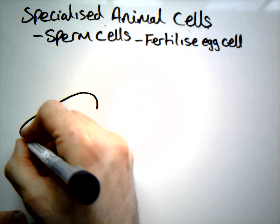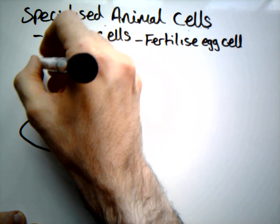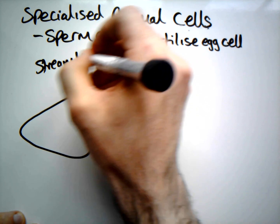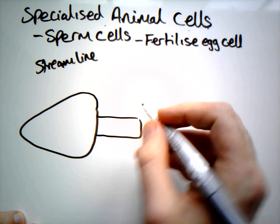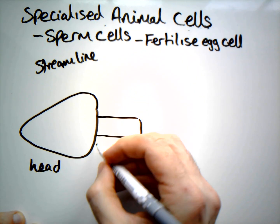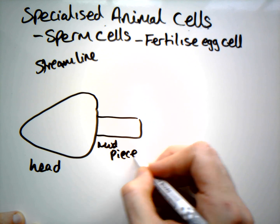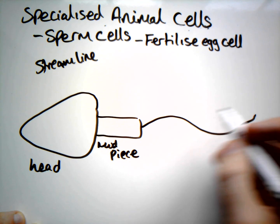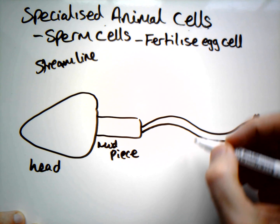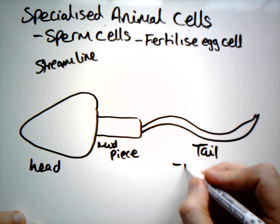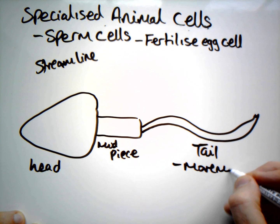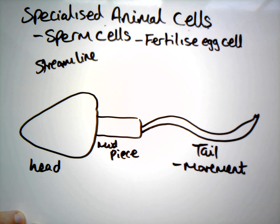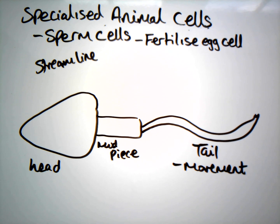The first key feature is they have a streamlined shape. We've got the head, the mid piece, and then our tail. The tail is for movement — in a corkscrew manner it propels the sperm cell through the vagina and up through the uterus into the oviduct.